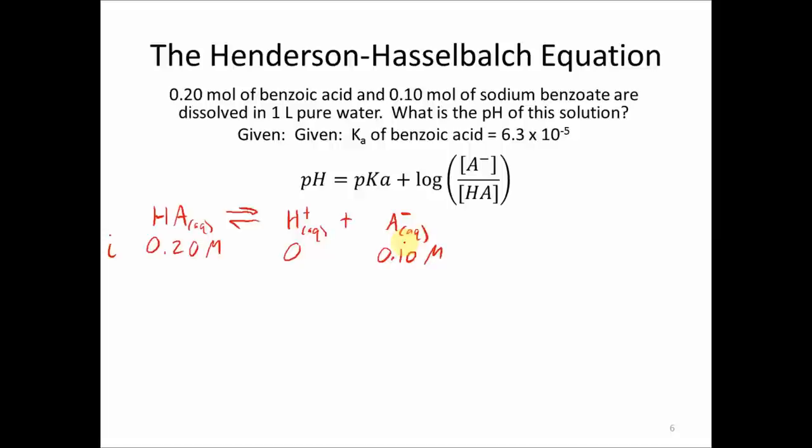So from here, we need the pKa. I gave you the Ka, but this is easily calculated in much the same way that the pH is calculated. The pKa is equal to the negative log of the Ka. And using 6.3 times 10 to the minus 5 here, we get that the pKa is equal to 4.202.